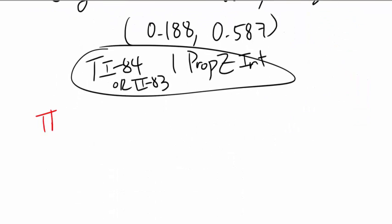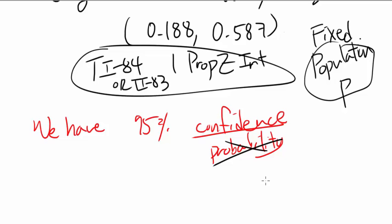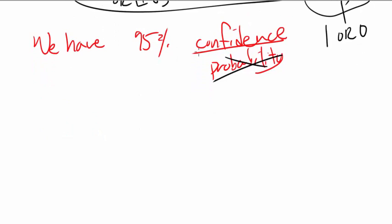We have 95% confidence. We cannot say it's 95% probability. Why can we not say 95% probability? The reason is the population proportion is not going to change, the population proportion is fixed. So there is either a probability of 1 or 0 that the population proportion is going to be contained within our interval. We don't have 95% probability, we either have 0% or 100%. What we are looking at is confidence. Probability should not be used or you are going to get points taken off.